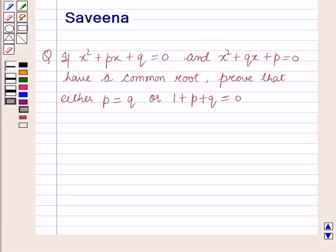Hello and welcome to the session. In this session we will discuss a question which says that if x squared plus px plus q is equal to 0 and x squared plus qx plus p is equal to 0 have a common root, prove that either p is equal to q or 1 plus p plus q is equal to 0. Now we will start with the solution.